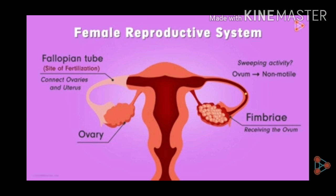Fallopian tubes are also known as oviduct, and these fallopian tubes are the site for fertilization. At the upper side, there is a sac-like structure.